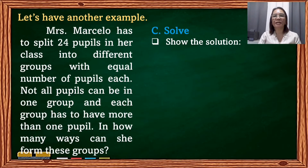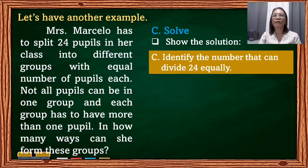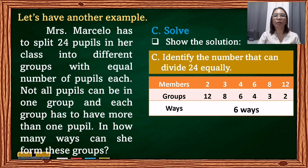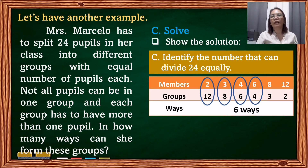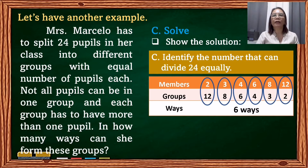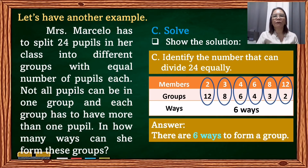Another way to solve this problem is to test divisibility — identify numbers that can divide 24 equally. 24 is divisible by 2, so you can form 12 groups with 2 members. 24 is divisible by 3, giving 8 groups with 3 members. Divisible by 4: 6 groups with 4 members. Divisible by 6: 4 groups with 6 members. Divisible by 8: 3 groups with 8 members. Divisible by 12: 2 groups with 12 members. All in all, you can group the pupils in 6 ways.